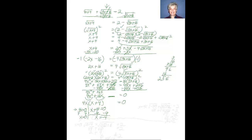Both of them might be correct, both might be extraneous, or only one might be correct — you don't know. So we're going to go back to the very first line of the equation and try each answer. Checking x equals 0: the square root of 0 plus 4 plus the square root of 3 times 0 plus 16 equals 2 becomes the square root of 4 plus the square root of 16 equals 2. That's 2 plus 4 equals 6, which does not equal 2. This is false.